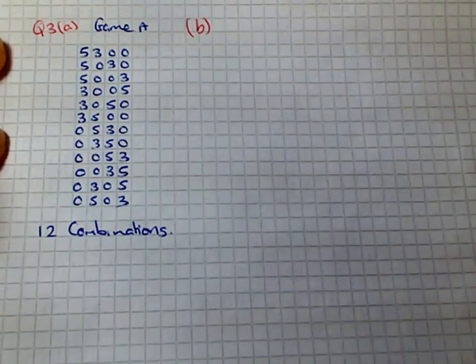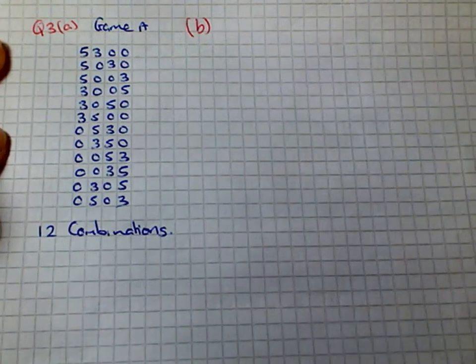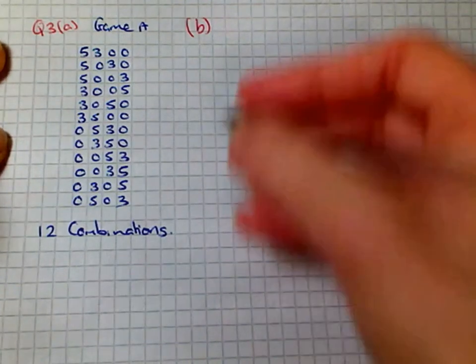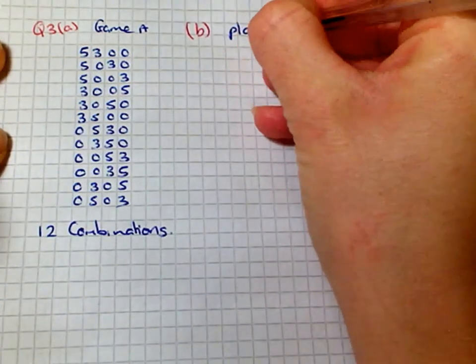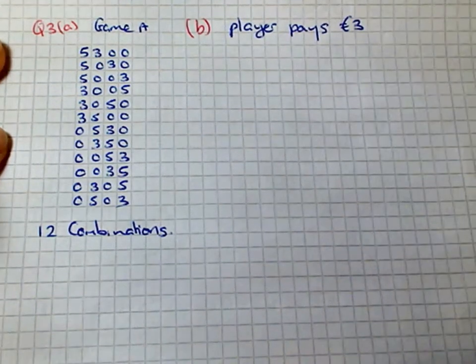Part B. To spin either arrow once, the player pays 3 euros. Which game of chance would you expect to be more successful in raising funds for the charity? Give a reason for your answer. So the player pays 3 euros to play the game.